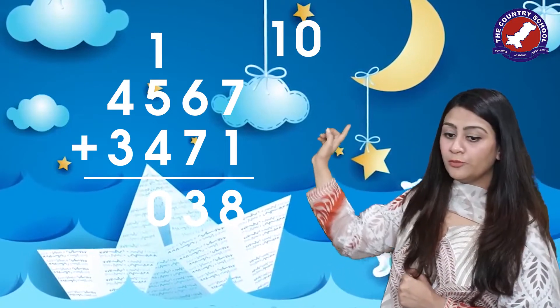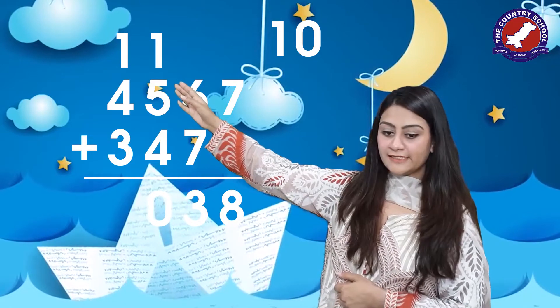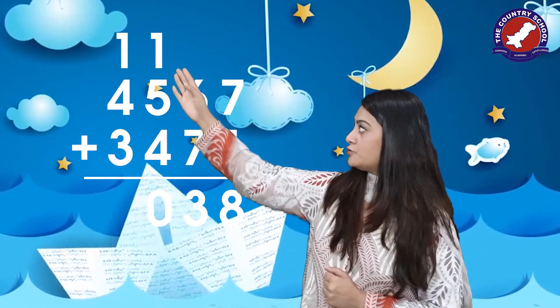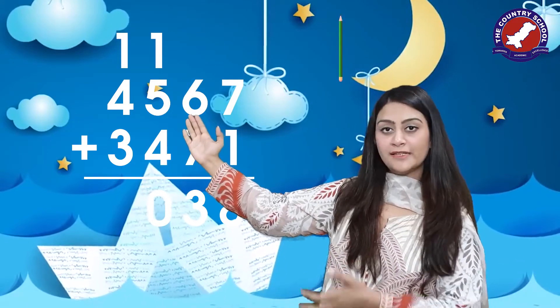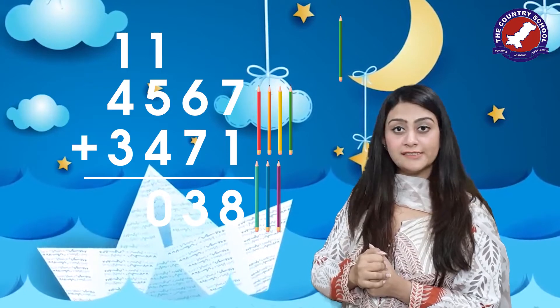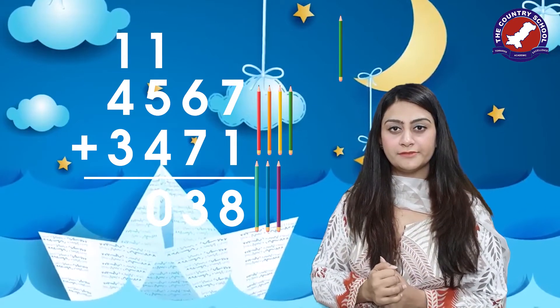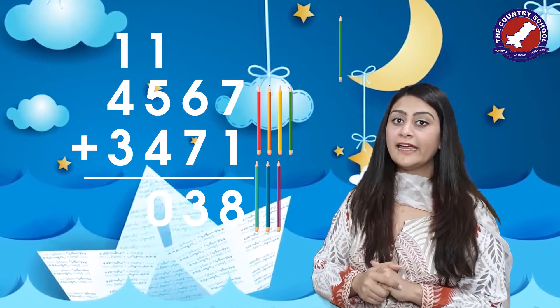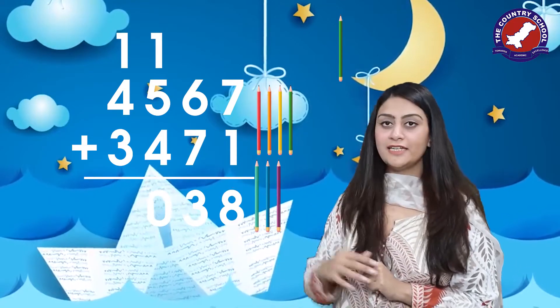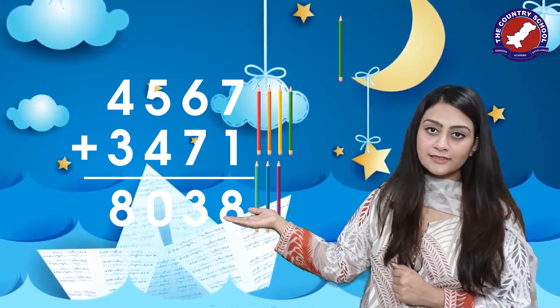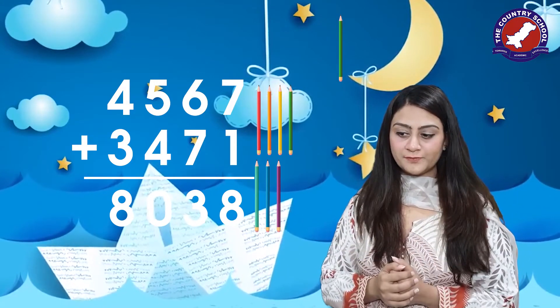Next we have one, four, and three in the thousands column. Take out one pencil, add four pencils, then add three more pencils, and count them all together. You have got eight pencils, so you write eight here. That is your answer — see how easy it was!